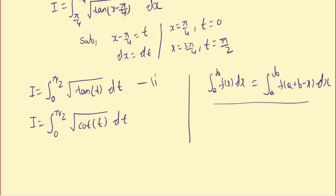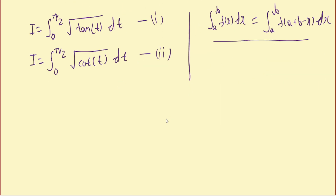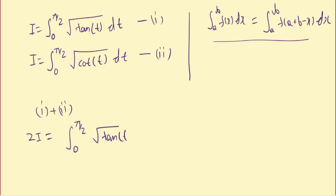Now I'm going to add the first and second equations. So we get 2I = ∫ from 0 to π/2 of (√(tan t) + √(cot t)) dt.